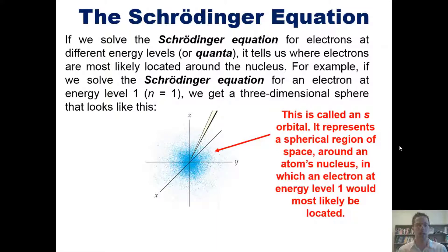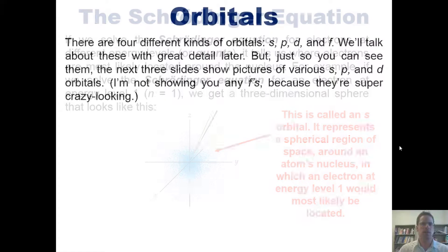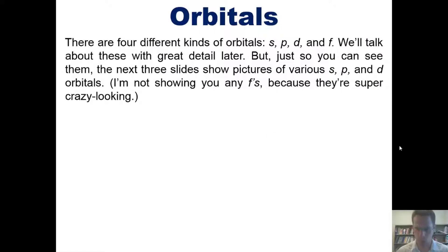So as it turns out, there are four different kinds of orbitals: s, p, d, and f. And I'm not the person who selected those letters, I'm just the messenger. We'll talk about these in greater detail later on, but just so you can see them, in the next three slides I'll show you pictures of various s, p, and d orbitals. I'm not going to show you any f orbitals because they're super crazy looking.